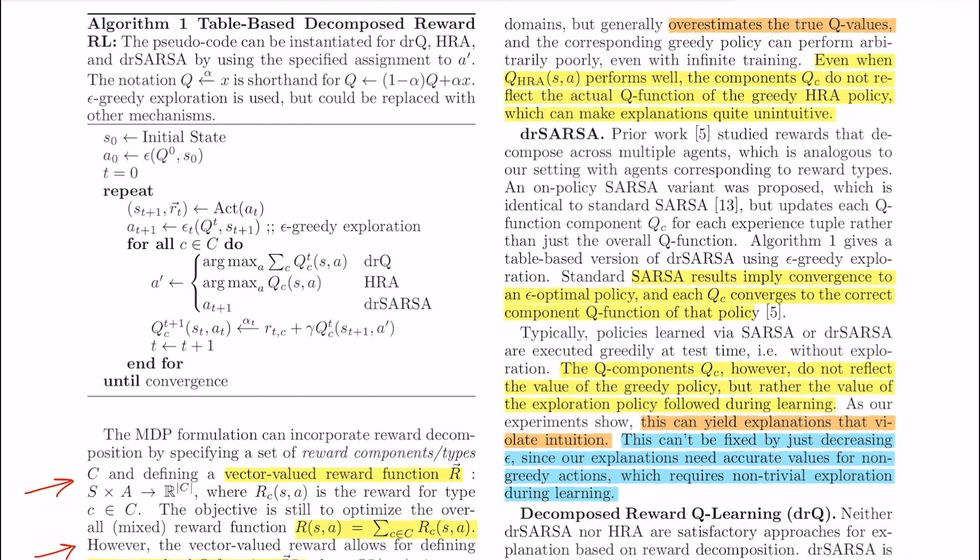So what is the problem that we are trying to tackle in certain technical detail? We need the component Q values to converge to the optimal component Q star. Now although the final policy can be fine, the problem that authors find in the component Q value update in previous works like HRA and SARSA, specifically HRA for now, is that the component Q values do not converge to the optimal component Q star. Well this happens with HRA.